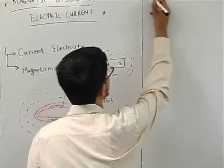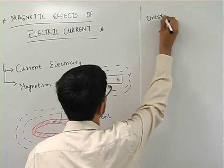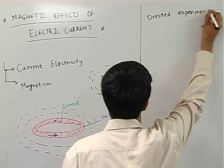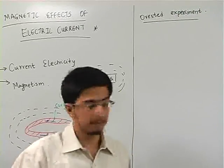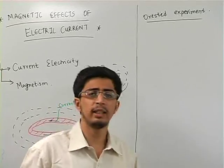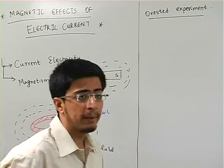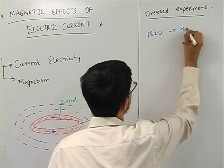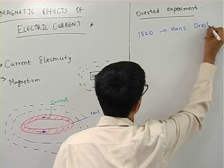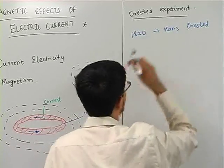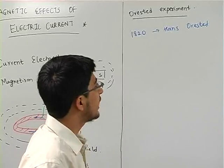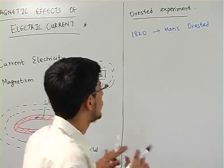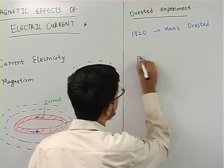Now we will start with a concept called the Oersted experiment. This experiment was done in your lower standards and was performed in the year 1820 by Mr. Hans Oersted. What he did was a very simple phenomenon which we have already studied in school, but it is still important to understand it clearly from this point of view.